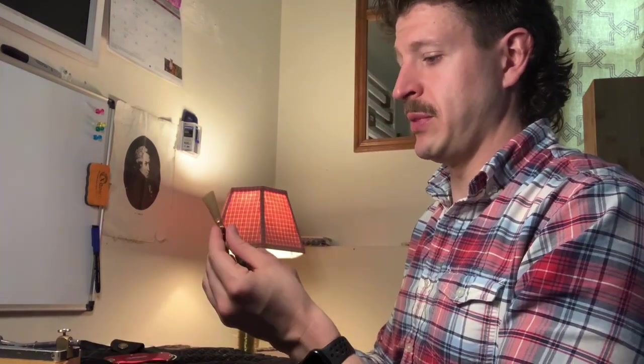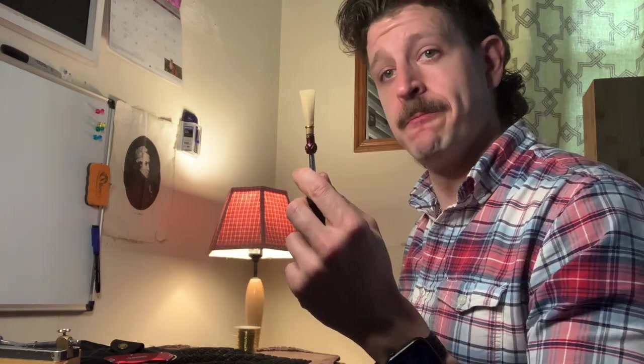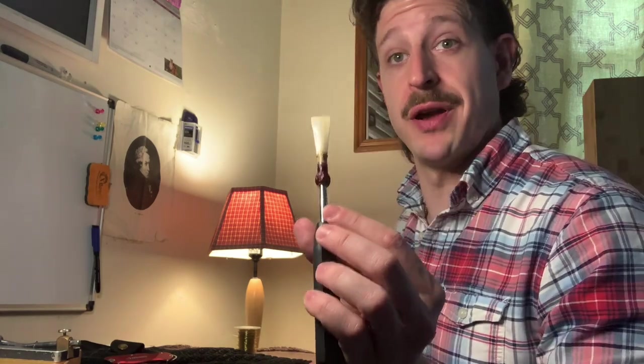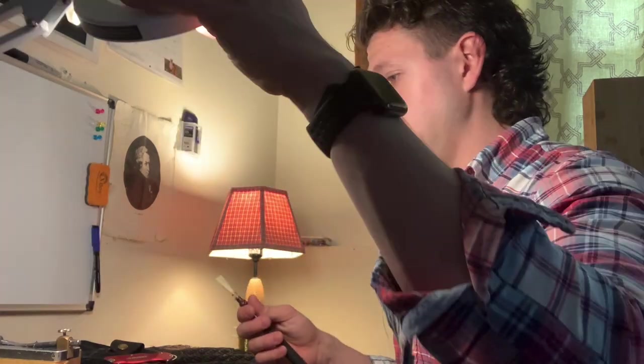Alrighty, so I want to put my reed on my mandrel, and this shape of reed I have is a Herzberg shape. Very popular. All my teachers have played on it, and I play on it. Now, your individual measurements will be different depending on your style of playing, the bassoon you're on, the shape you're on.